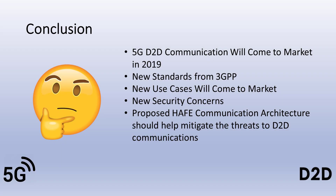5G D2D communications will become commercially available in 2019. The new use cases for the technology in medical devices, automotive, and Internet of Things will bring about an increased threat level. The new standards for latency and speed are creating a need for new and more secure D2D communications architecture. The HAFE scheme proposed in this presentation addresses the need for more secure and faster communications by leveraging high-speed signature for authentication, two-fish for encryption, and frequency hopping with the new concept of antenna addressing to create a more secure and fast D2D communications standard.